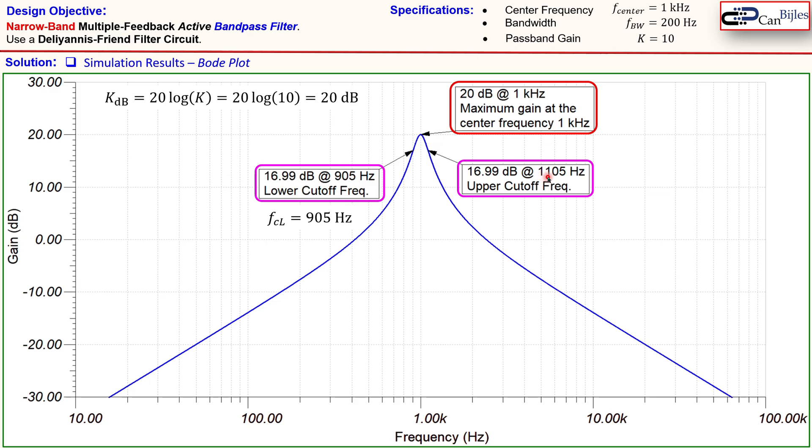And the upper cutoff frequency again the same thing because you go down again by same amount 3.01 dB and that happens at 1105 hertz which is our upper cutoff frequency so we see here fch for upper cutoff frequency. Now what is the bandwidth? Bandwidth is actually the upper cutoff frequency minus the lower cutoff frequency which is actually shown here and that means all the specifications are met because this is also 200 hertz as we want it for our design.